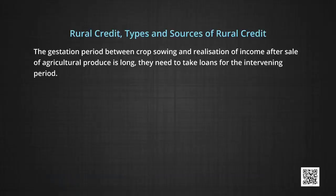Now, rural credit — its various types and sources. Farmers require credit for various purposes: to buy additional land, implements and tools, fertilizers and seeds. They also need to pay off old debts and personal expenses like marriage, death, religious ceremonies, etc. As the gestation period between crop sowing and realization of income after sale of agricultural produce is long, they need to take loans for the intervening period.